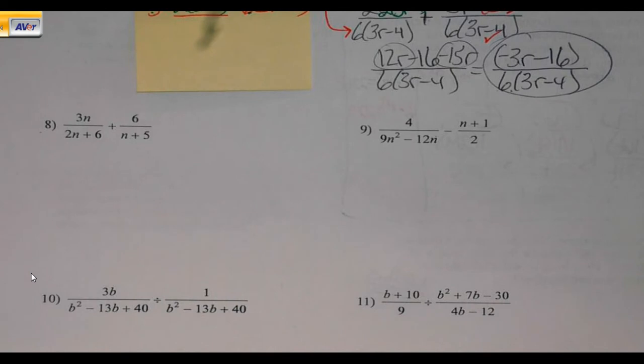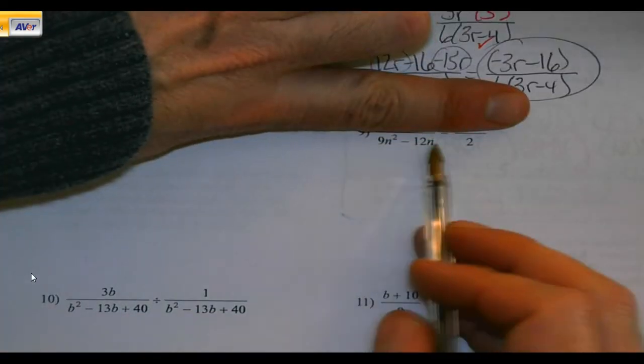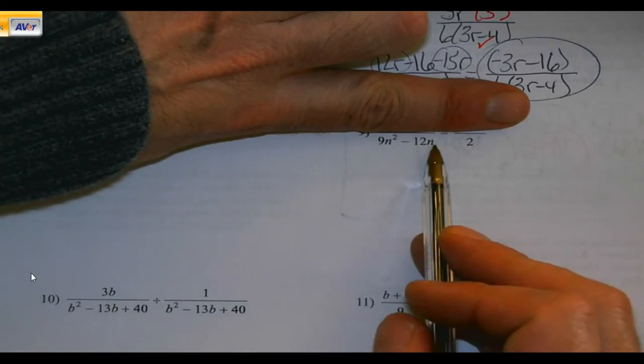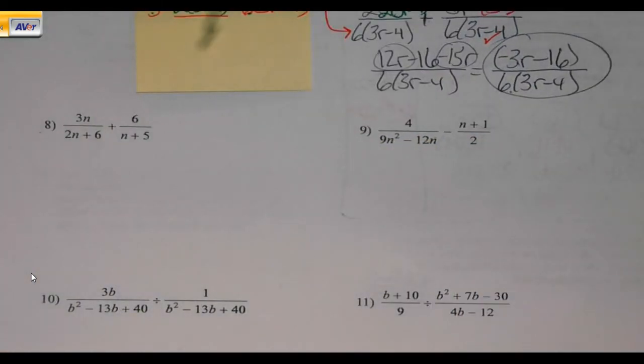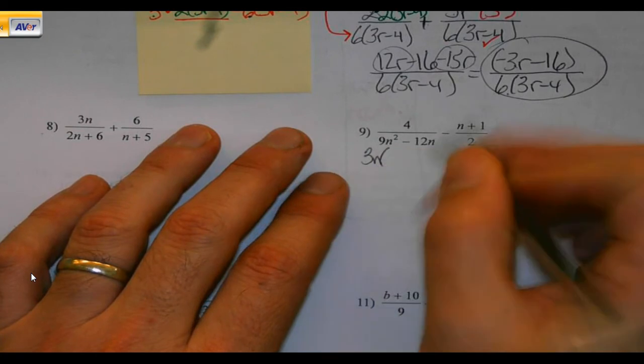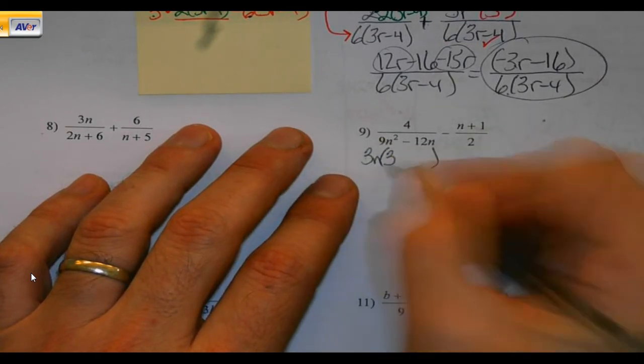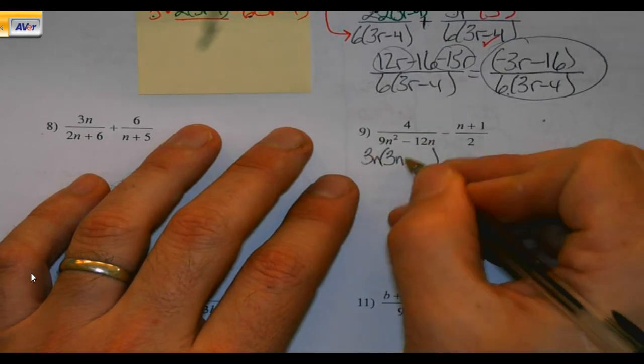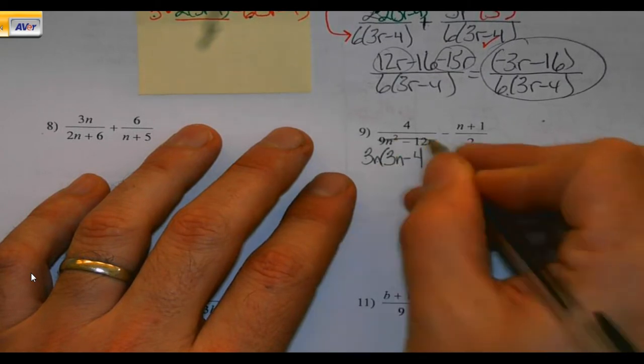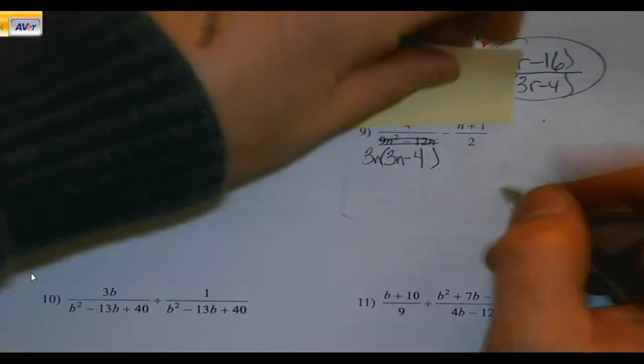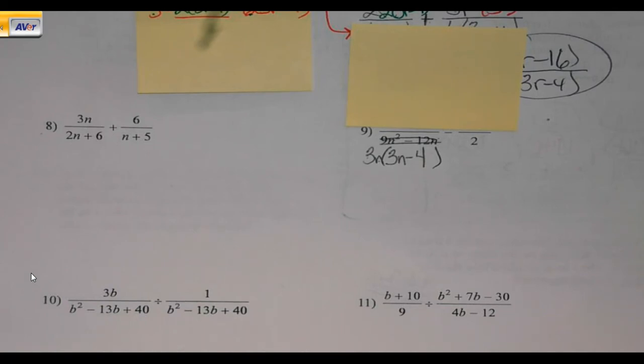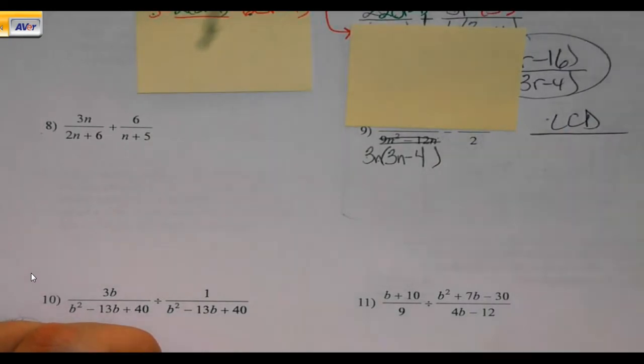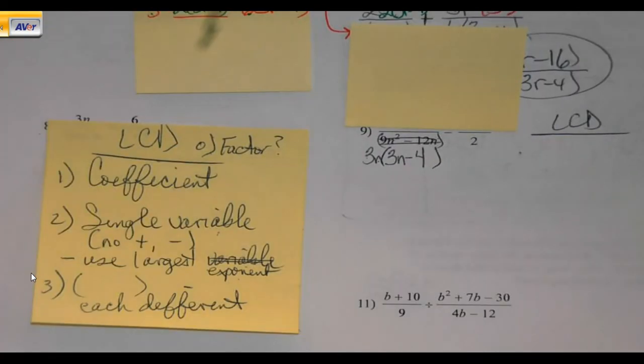As we keep rolling through these, we have another add and subtract problem. We're going to need an LCD. I see all sorts of fun things here for factoring. I see they both have an n. And I see that they're both going to be divisible by 3. I can get a 3 and an n out of there. 3 times 3 is 9. I got 1n. I need 2. 3 times what gets me to 12, 4. So, I took care of that part.